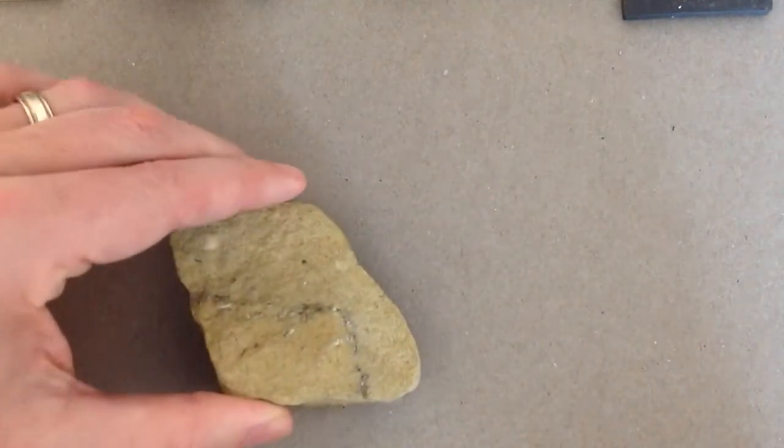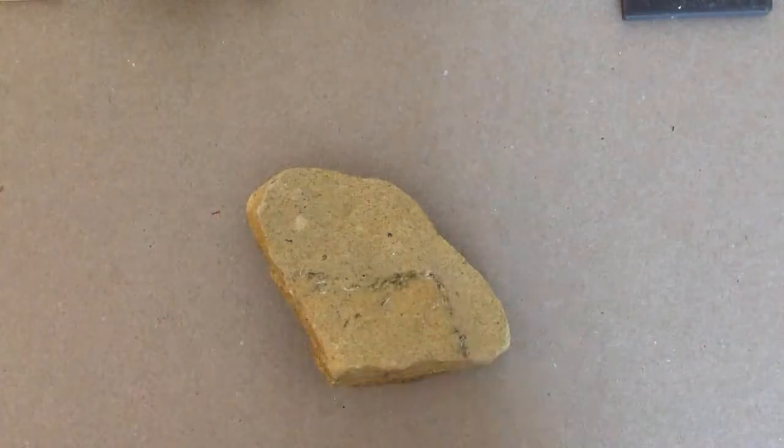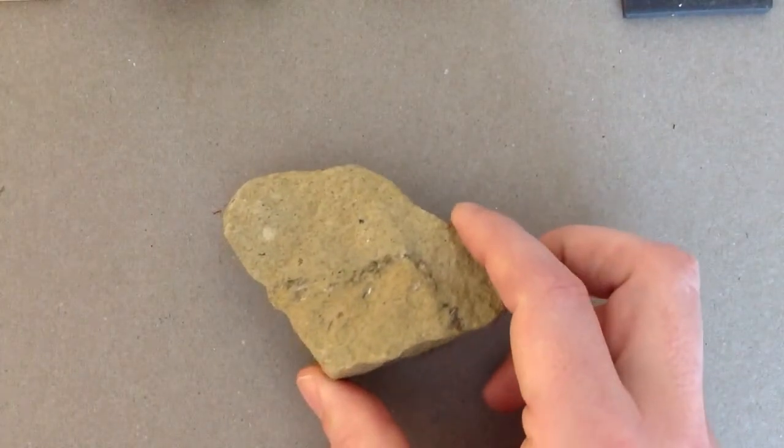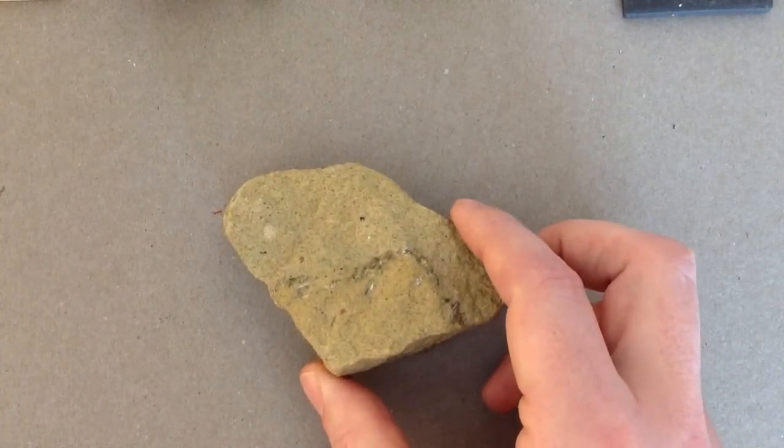And the other one that's easy to identify is olivine. Olivine always has kind of this olive green look to it. So color, not a good identifying property.